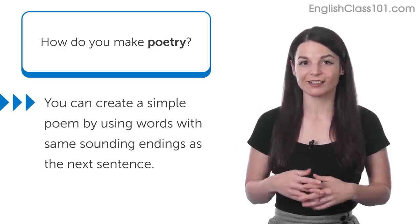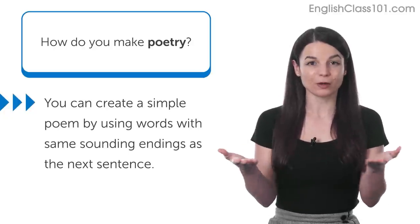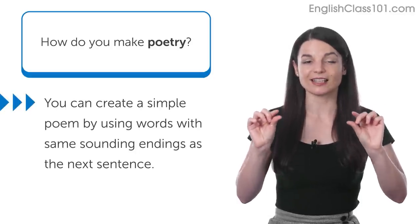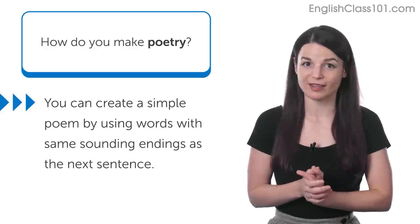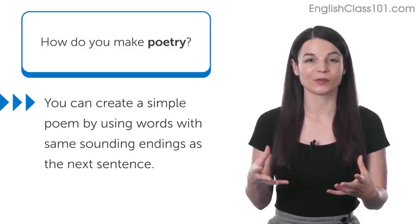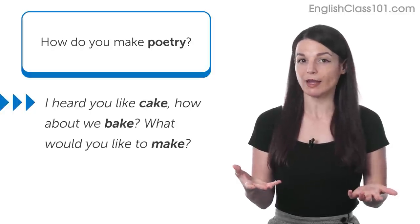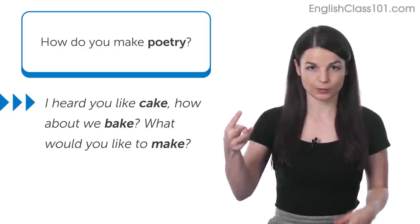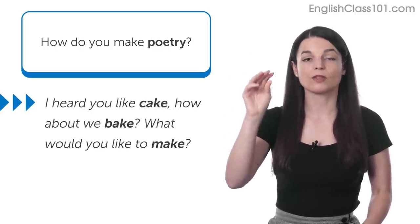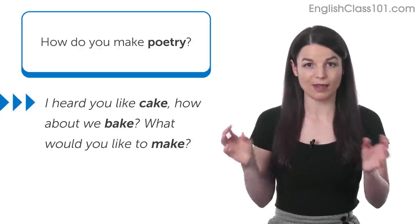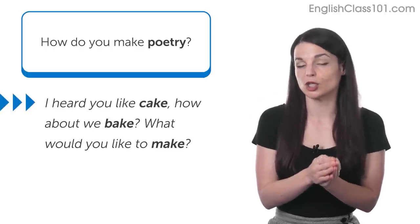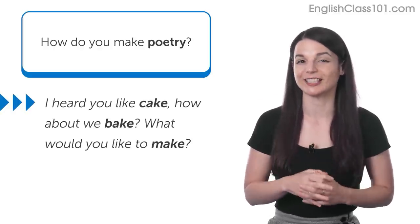So, when we're very, very little kids, we learn to make very simple poems by creating short sentences that rhyme. So, that means the end of the sentence has the same sound as the end of the next sentence. So, here's a very, very basic example of what it sounds like when the ends of the sentences that we put in our poems rhyme. So, I heard you like cake. How about we bake? What would you like to make? So, in these three lines, we have the ending sounds that all rhyme, right? We have cake and bake and make. So, this is the simplest form of a rhyme.